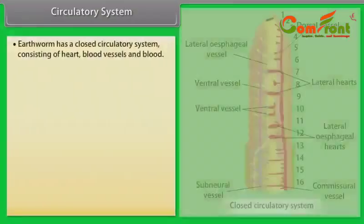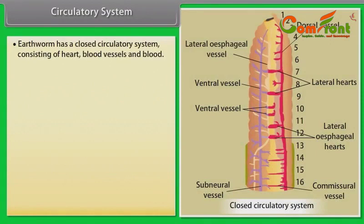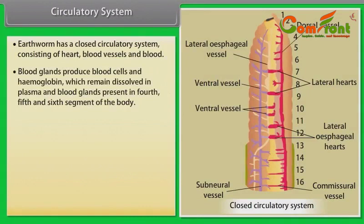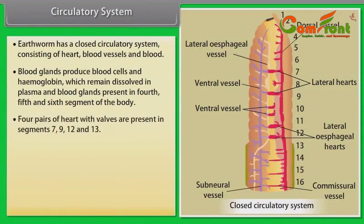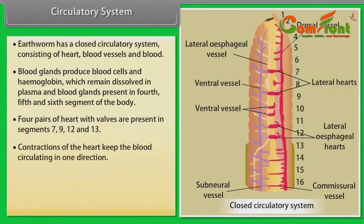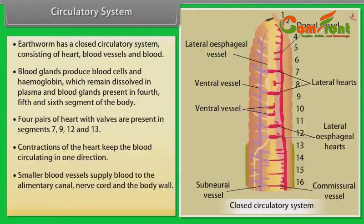Circulatory System: Earthworm has a closed circulatory system consisting of heart, blood vessels and blood. Blood glands produce blood cells and haemoglobin, which remain dissolved in plasma. Blood glands are present in the fourth, fifth and sixth segments. Four pairs of hearts with valves are present in segments 7, 9, 12 and 13. Contractions of the heart keep blood circulating in one direction. Blood cells are phagocytic in nature.